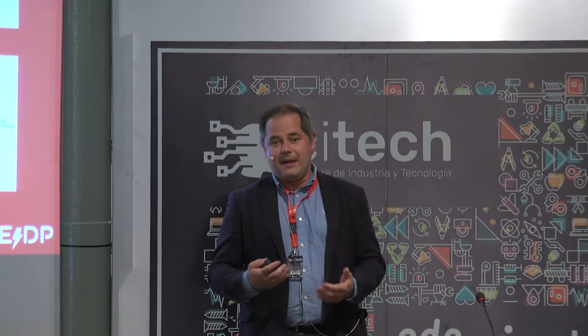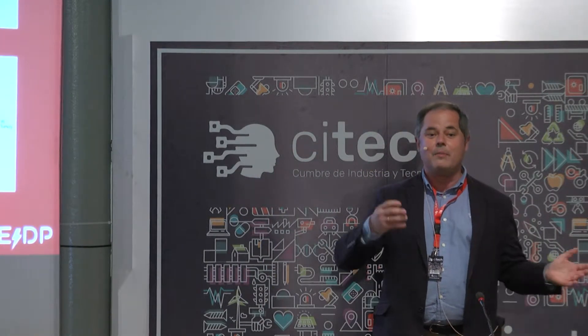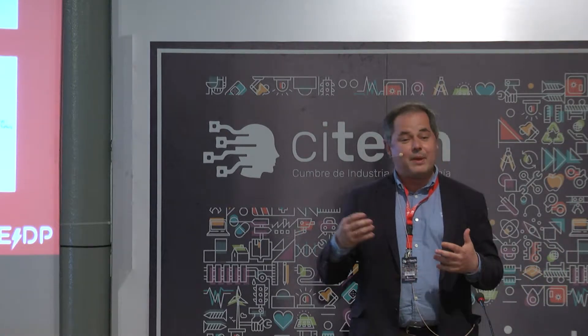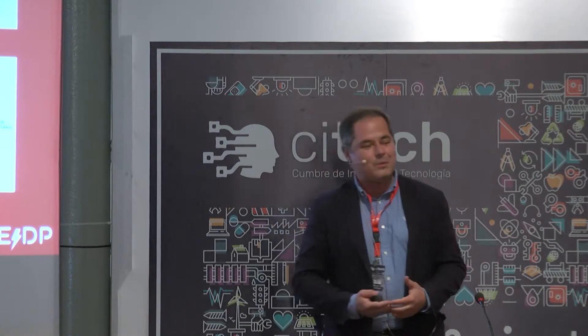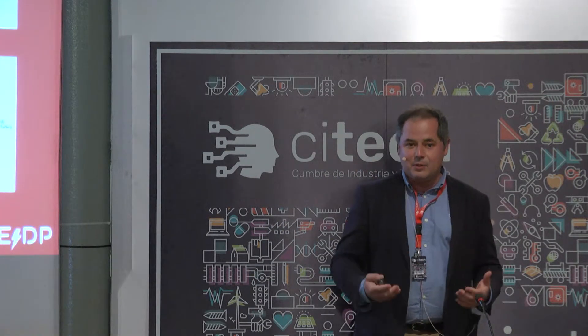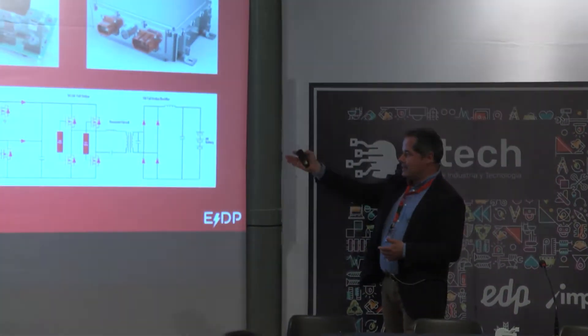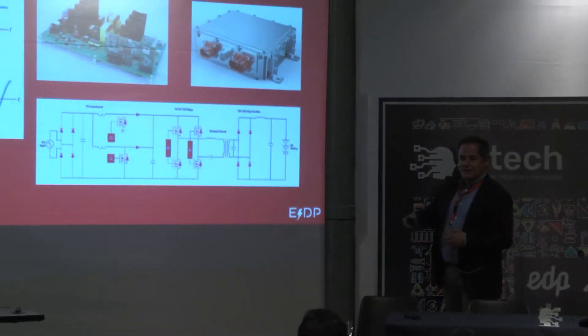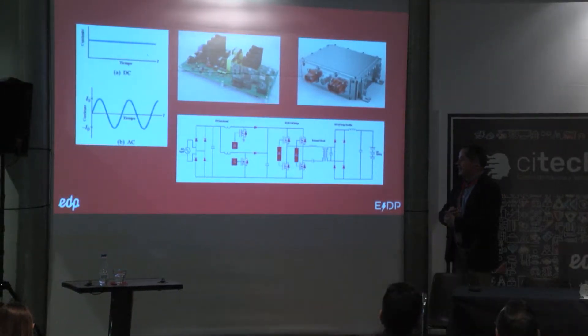La interrelación que hay entre la corriente alterna y continua y cómo pasar de una a otra empieza a ser muy interesante. Empieza a haber electrónica de potencia a un coste muy razonable, muy atractivo, y equipos que permiten esa conversión de un tipo de corriente a otra. DC son las iniciales en inglés de corriente continua, AC las de corriente alterna.